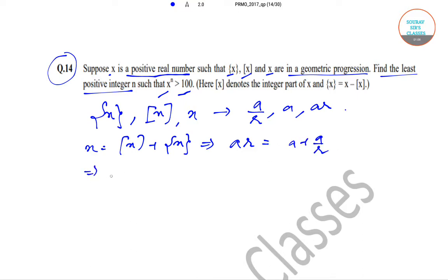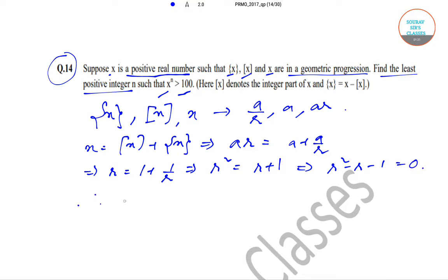That implies r equals 1 plus 1/r, and therefore r² equals r plus 1, which gives us r² minus r minus 1 equals 0. Upon solving for the value of r, we get r equals (1 ± √5) / 2.